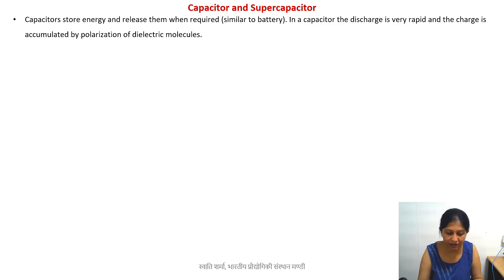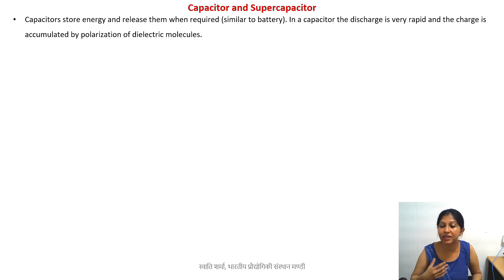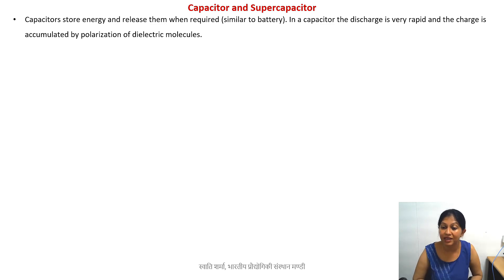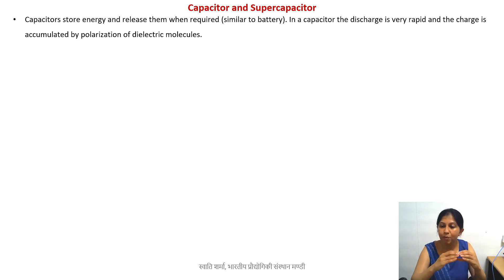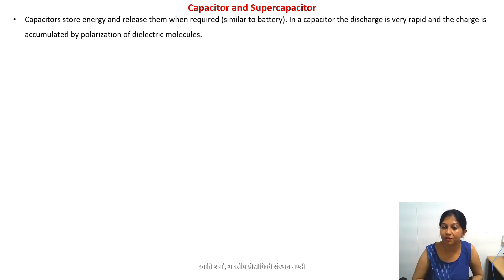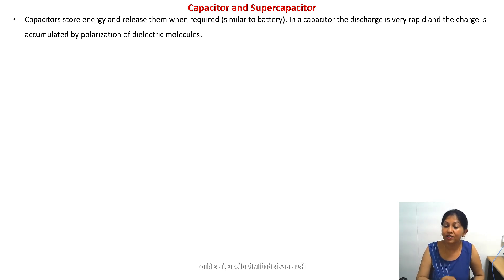How is it different from batteries? The battery has certain electrochemical reactions. While in the case of capacitors, you have a dielectric material. It's not that no electrochemical reaction is taking place, but you primarily have a dielectric material whose molecules can be polarized - positive and negative charges can be separated. Based on this principle, you store the charge and when you discharge it, it is very rapid.